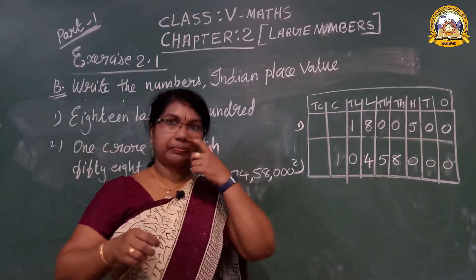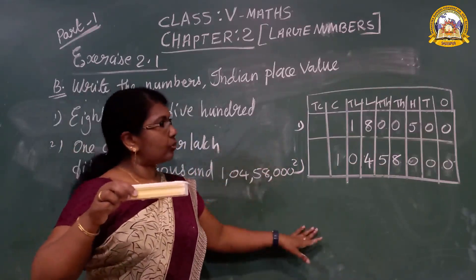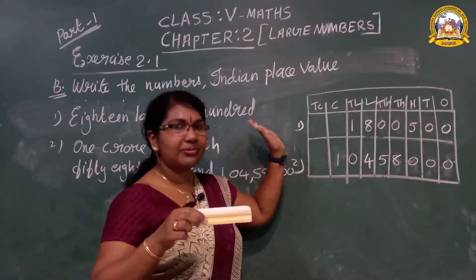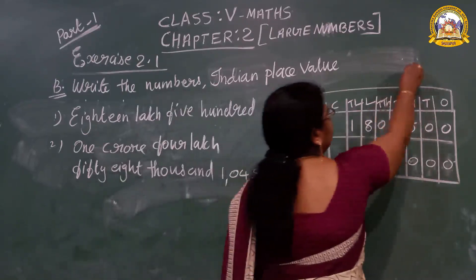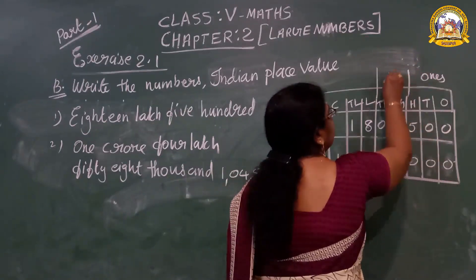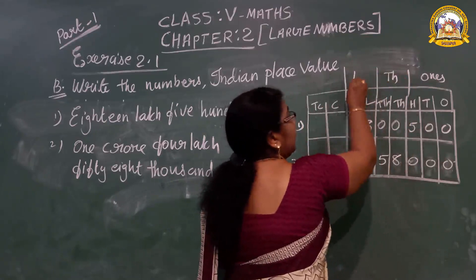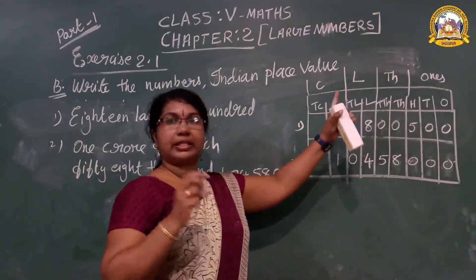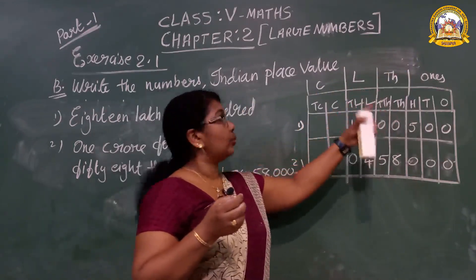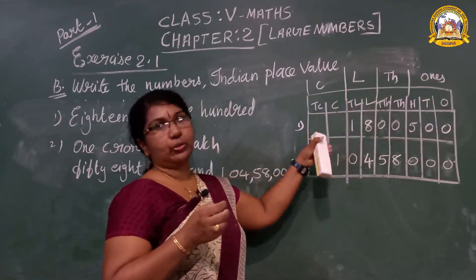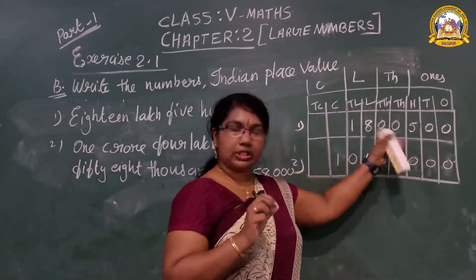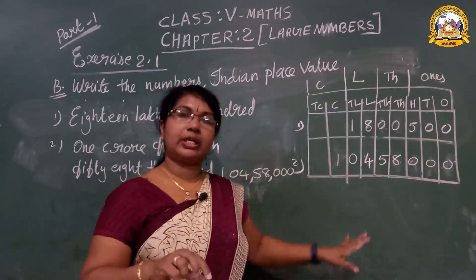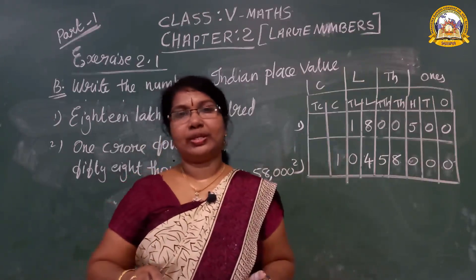Now understood, students? Remaining two more questions — first make the place value chart with nine columns: ones period has three digits, thousands has two, lakhs has two, crores has two. If digits are not given, use zeros. So dear students, two more questions — make the place value chart and do as homework. See you in next class.